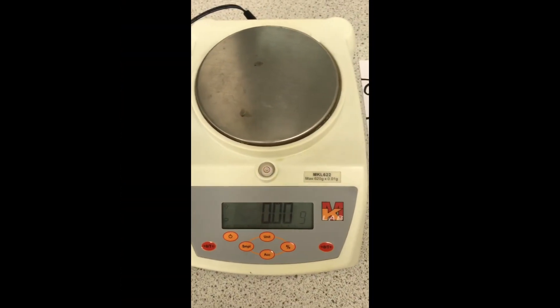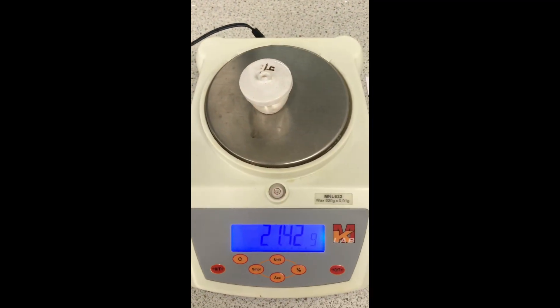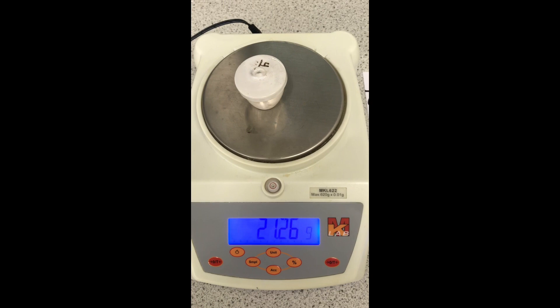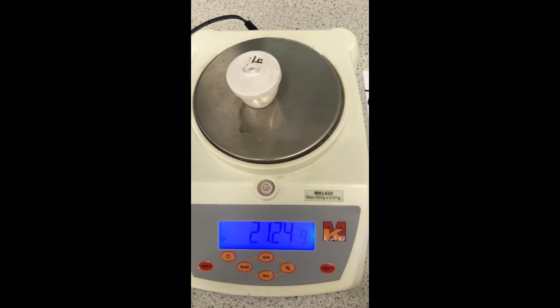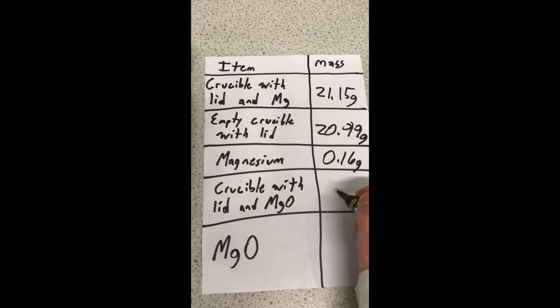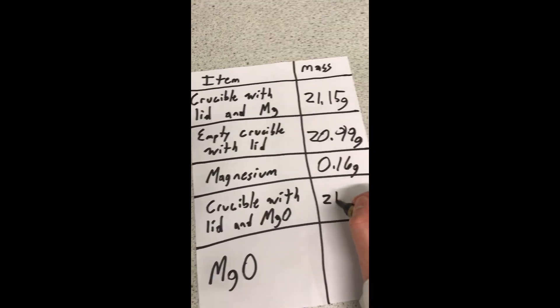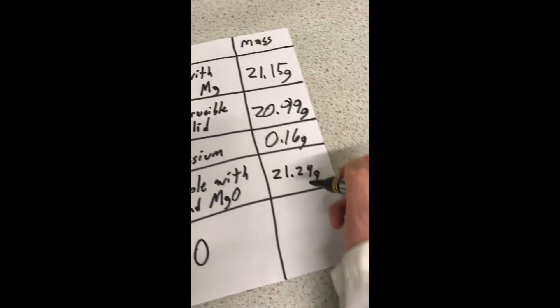My crucible is now cooled, so I will place my crucible with the magnesium oxide inside onto the weighing scale. We can see the mass is now 21.24 grams.